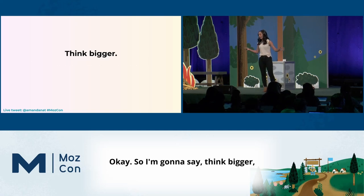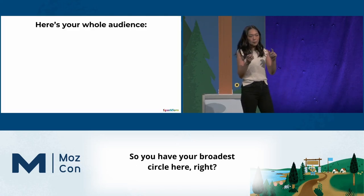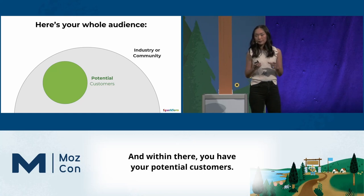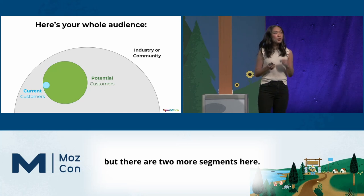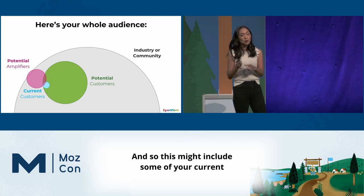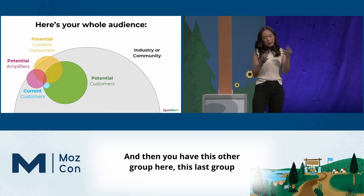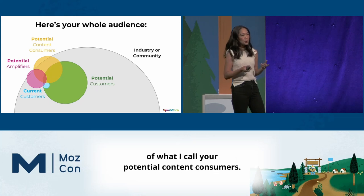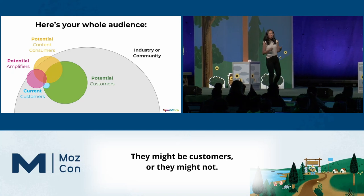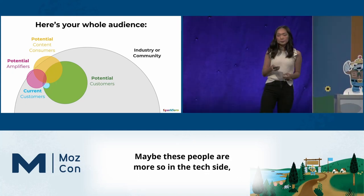Think bigger. Consider the whole audience. You have your broadest circle — your industry or community. Within that, your potential customers. Within that, your current customers. But there are two more segments: your potential amplifiers — the people who might amplify your content, including some current and potential customers, mostly people in your industry, community, or niche. And your potential content consumers — people who might read your blog or newsletter, listen to your podcast. They might be customers, or they might not. They could be a little outside your industry, maybe on the tech side, but they're still part of your audience.